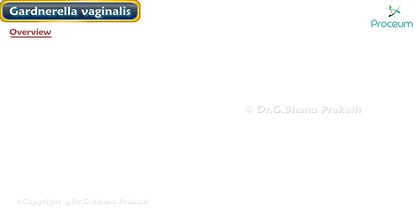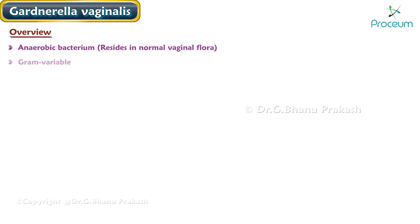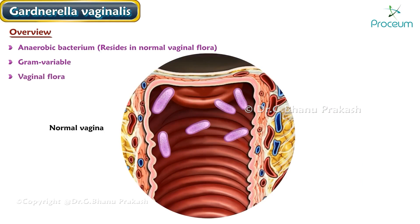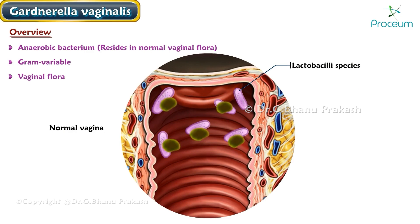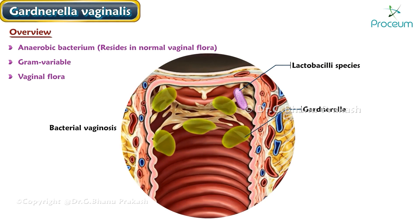Gardnerella vaginalis is an anaerobic bacterium that resides in the normal vaginal flora. Gardnerella vaginalis is gram variable, which means it can stain either positive or negative with gram staining. Normally, vaginal flora is predominated by the lactobacilli species, but when organisms such as Gardnerella begin to overgrow and become the dominant species, this leads to bacterial vaginosis.